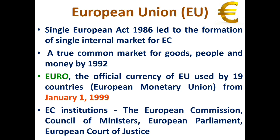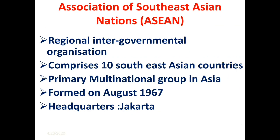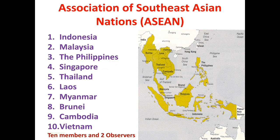Shifting to the Asian region, we have ASEAN — the Association of Southeast Asian Nations — which comprises ten of the fastest-growing Southeast Asian countries. It is an intergovernmental regional organization with headquarters in Jakarta, Indonesia, and is the primary multinational group in Asia. Its ten members are Indonesia, Malaysia, Philippines, Singapore, Thailand, Laos, Myanmar, Brunei...